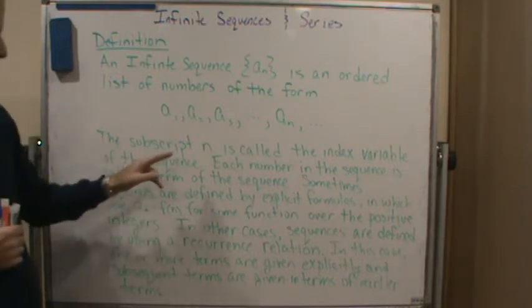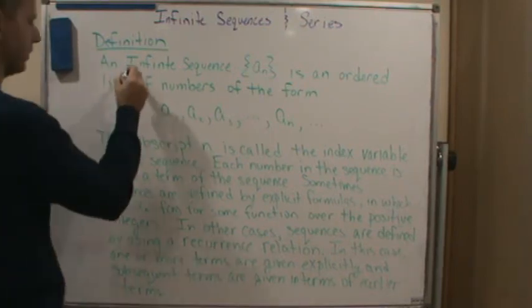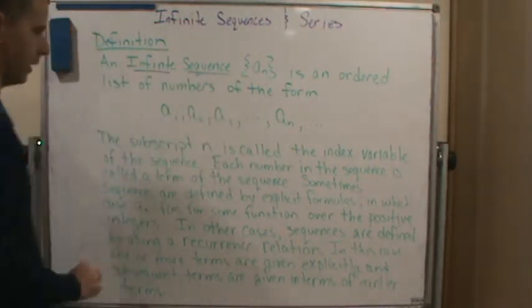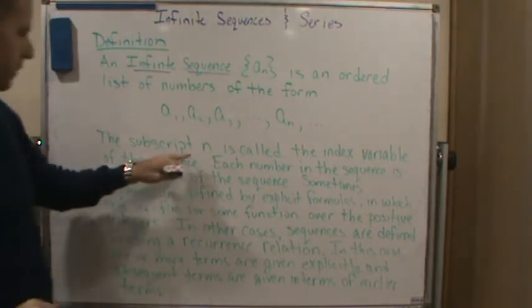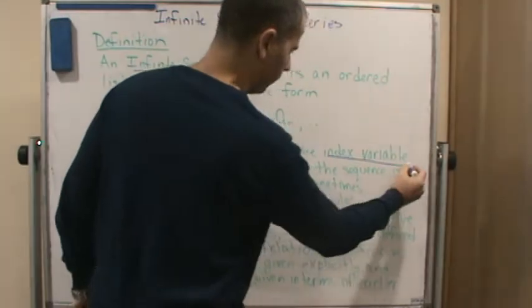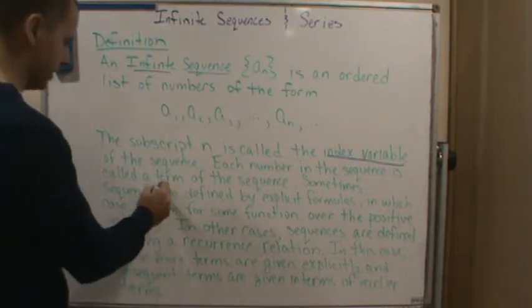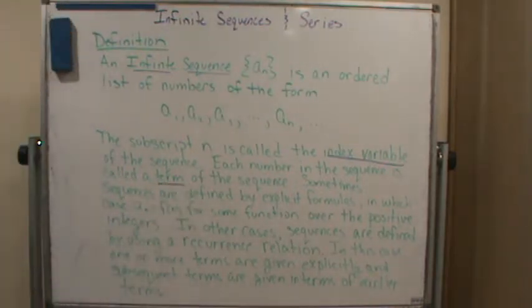Now the subscript n, so let's fill out some things. So infinite sequence. So there's a subscript n, it's called the index variable of the sequence. Each number in the sequence is called a term of the sequence.